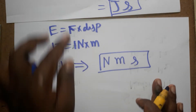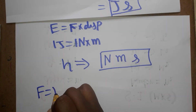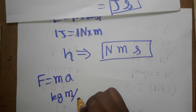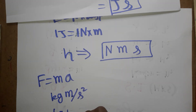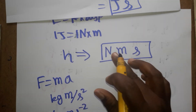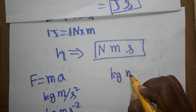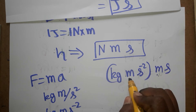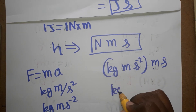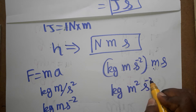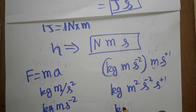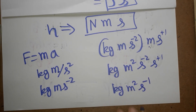Next, we expand Newton using force equals mass times acceleration. Newton equals kg·m·s⁻². Substituting: Planck constant unit becomes kg·m·s⁻² × m × s, which gives kg·m²·s⁻¹. So the final SI unit of Planck constant is kg·m²·s⁻¹.